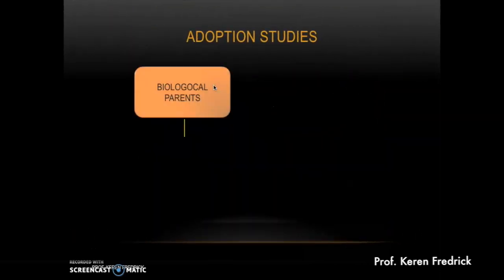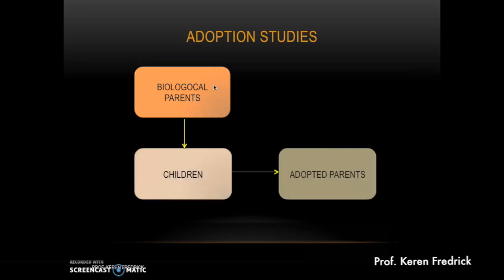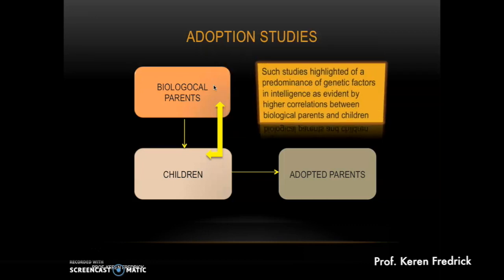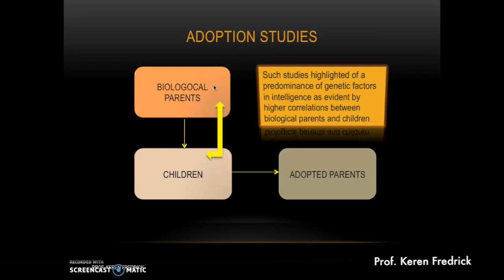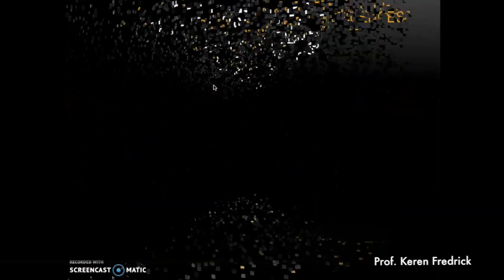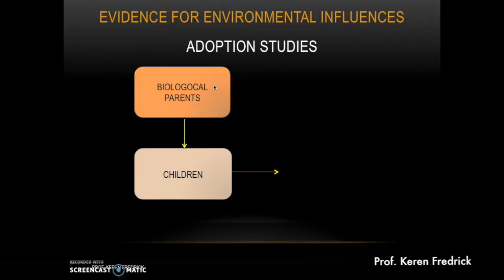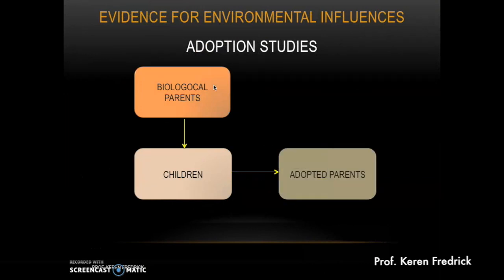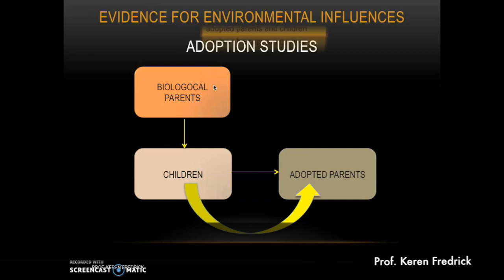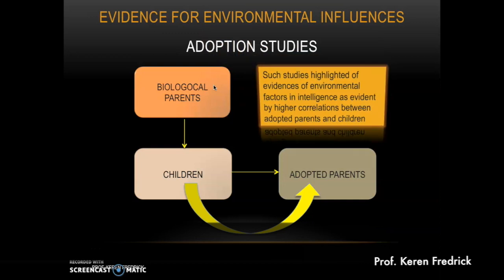Adoption studies also provide evidence on heredity. Children given up for adoption and raised by adoptive parents are compared with their biological parents. Research shows that these children's IQ scores are quite similar to their biological parents' scores, irrespective of being raised in a different home environment. However, adoption studies also show a partial correlation with adoptive parents, indicating that a stimulative or deprived environment in the adoptive home can also influence children's IQ scores, pointing to environmental influences as well.